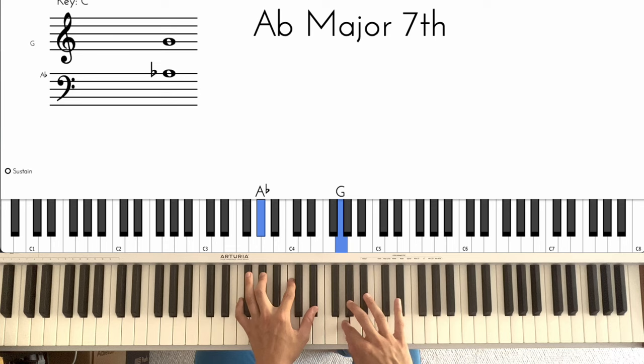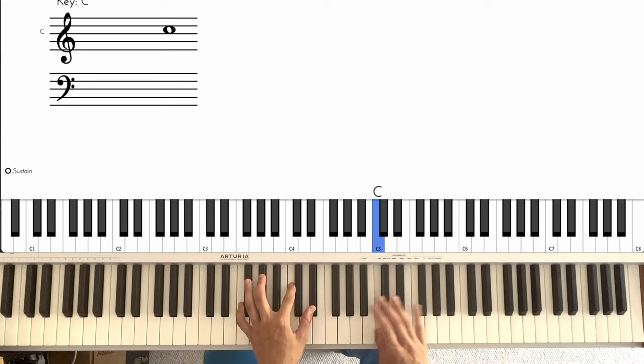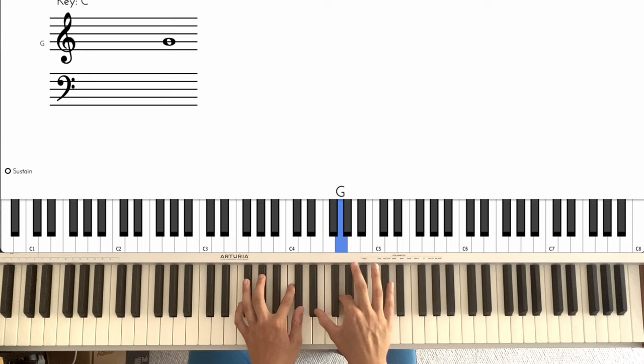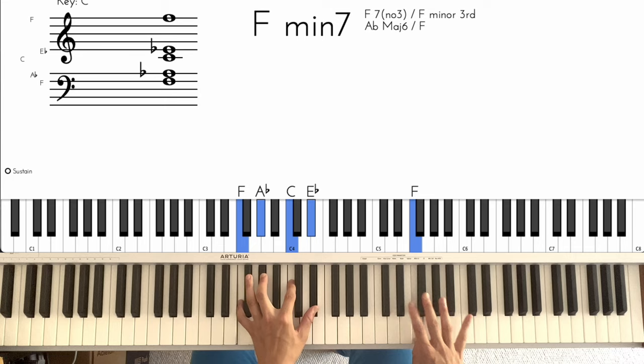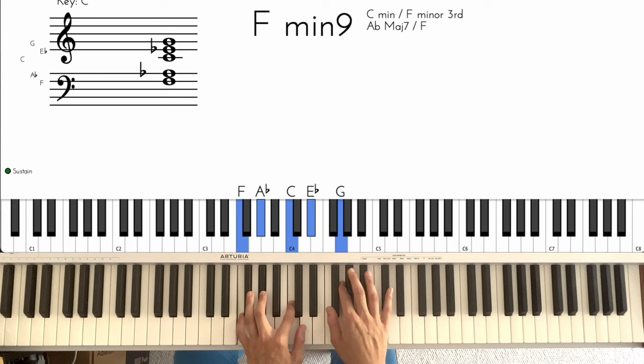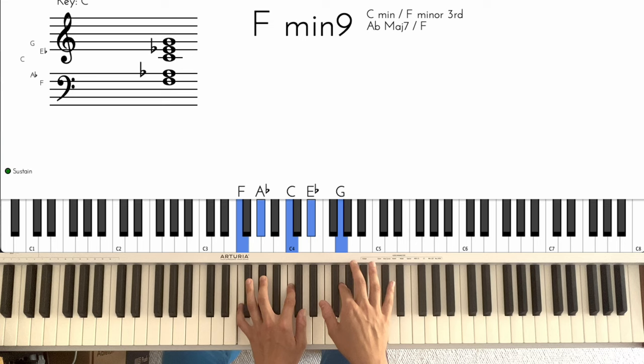[plays] Down to the E flat. Then from there we go [plays]. Okay, so [plays] starting with the C on the thumb going to the 4 on the B flat [plays]. Okay, so full thing [plays]. Okay, and a bit faster.